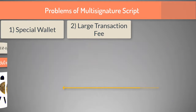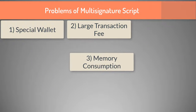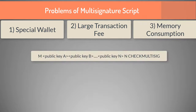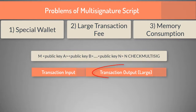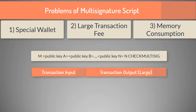The third problem is memory consumption. Because of the complex script with many public keys, the transaction output is large in size, which in turn means high memory consumption, because unspent transaction output is often stored in RAM.